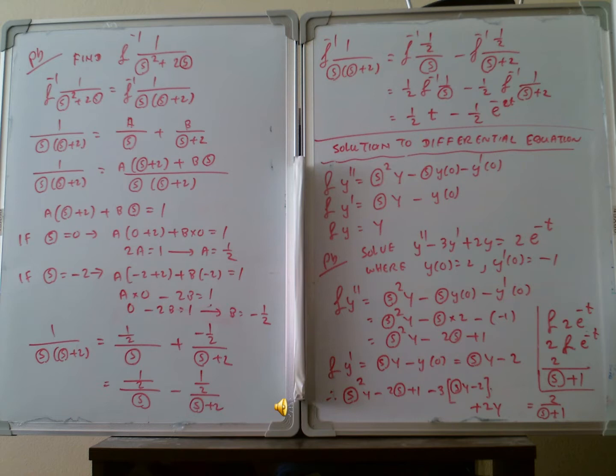So in this case, we have to solve the equation: y double-prime minus 3y-prime plus 2y equals 2e to the minus 3t, where y(0) equals 2 and y-prime(0) equals minus 1. Applying the Laplace transform: the transform of y double-prime gives s squared Y minus s times y(0) minus y-prime(0), and the transform of y-prime gives s times Y minus y(0).